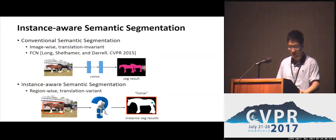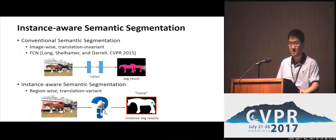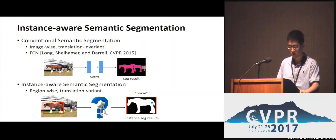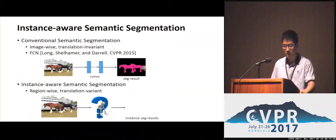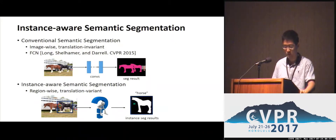The instance-aware semantic segmentation task categorizes and segments object instances individually. Conventional FCNs do not work due to their inherent limitation. Because convolution is translation invariant, the same image pixel receives the same responses irrespective of relative position in the context. However, instance-aware semantic segmentation needs to operate on the region level, and the same pixel can have different semantics in different regions.